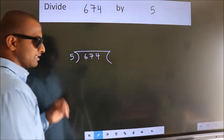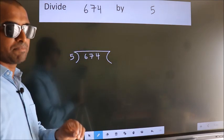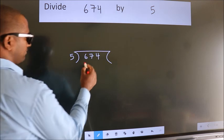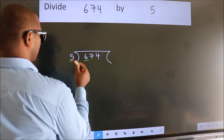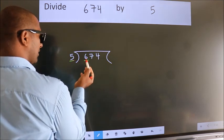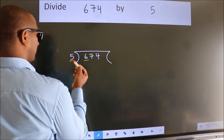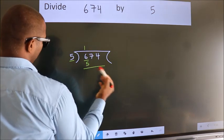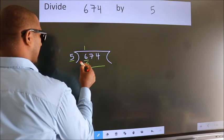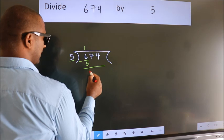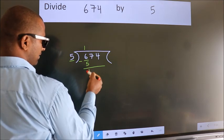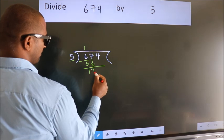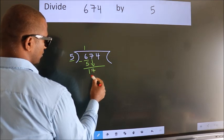This is your step 1. Here we have 6, here 5. A number close to 6 in the 5 times table is 5 once 5. Now we should subtract. We get 1. After this, bring down the beside number, so 7 down. So 17.